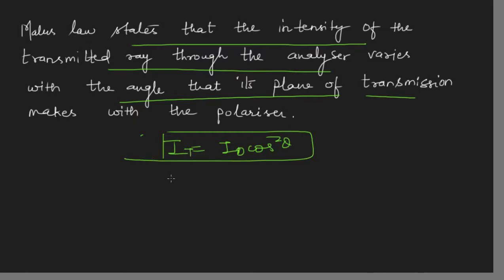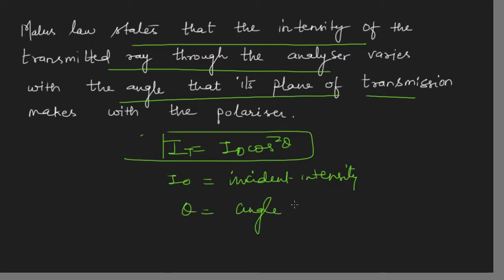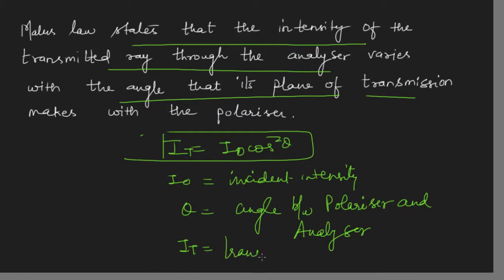Malus's law states that the intensity of transmitted light through the analyzer varies with the angle its plane of transmission makes with the polarizer. I_t = I₀ cos² theta, where I₀ is the incident intensity, theta is the angle between the polarizer and analyzer — the analyzer can also be called the plane of transmission — and I_t is the transmitted intensity.